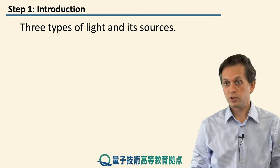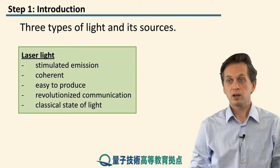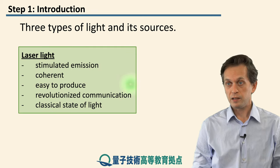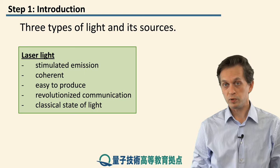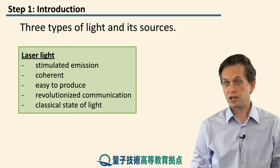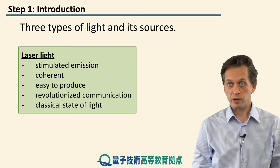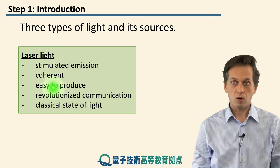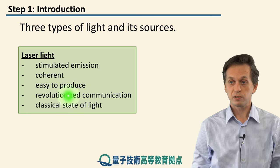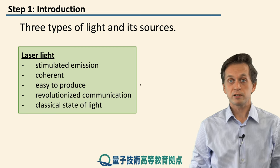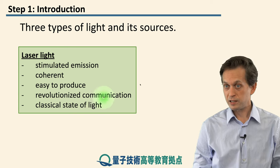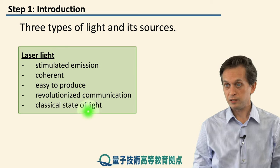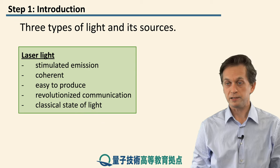We will then move on to coherent light produced by lasers. The main mechanism behind producing this light is known as stimulated emission, which we will discuss in the next couple of steps. This light is coherent and relatively easy to produce, which sparked the first information revolution. But again, it's still just a classical state of light, and we will explain exactly why that is.